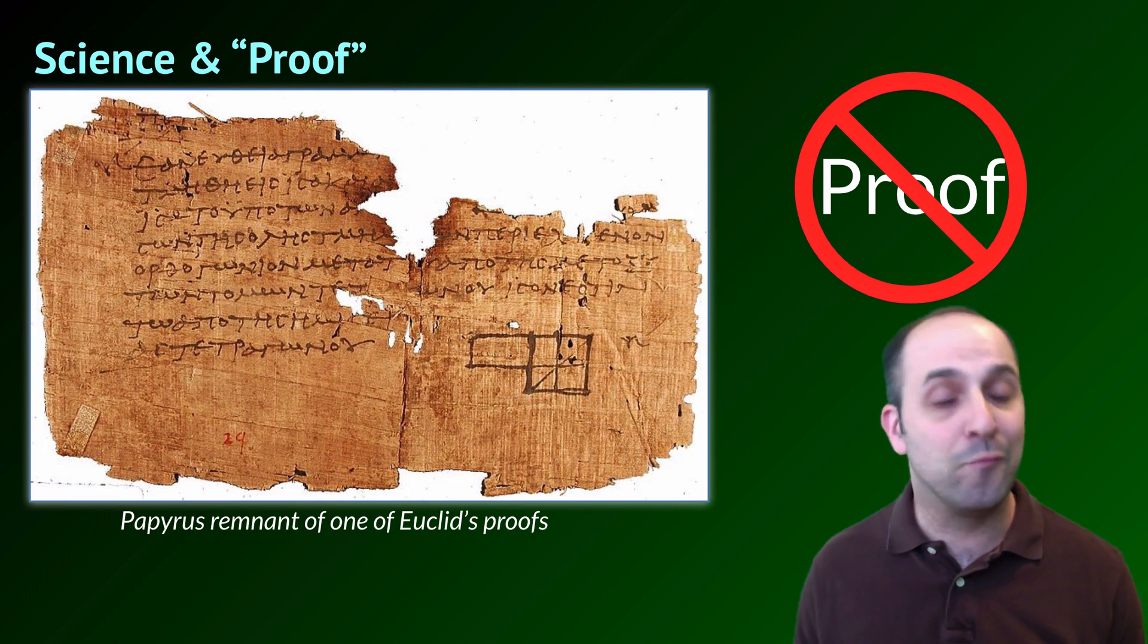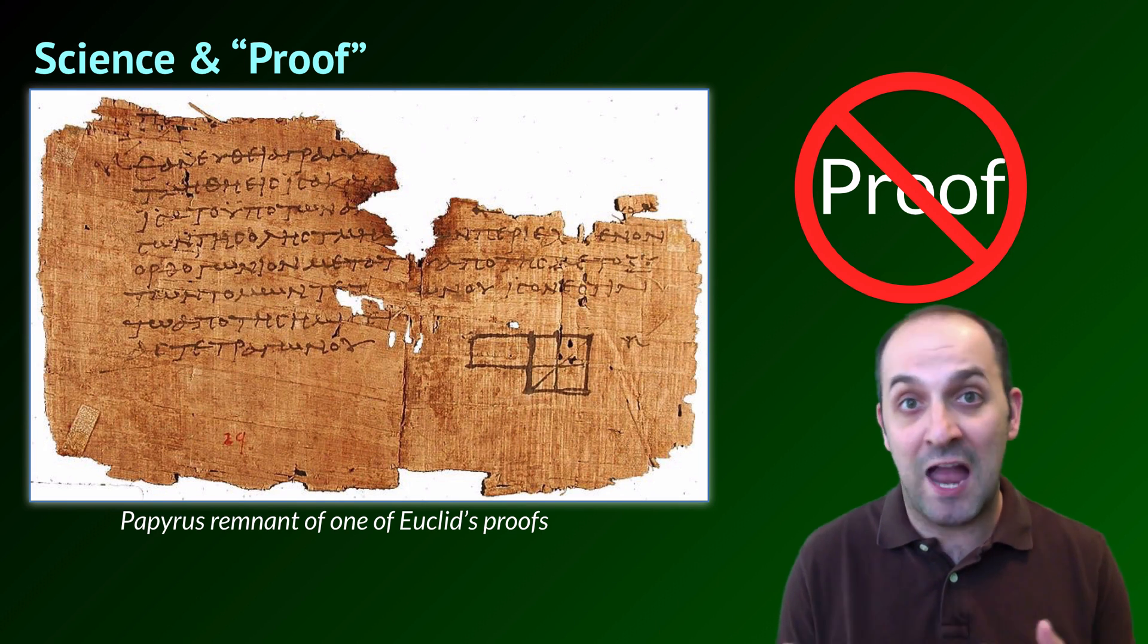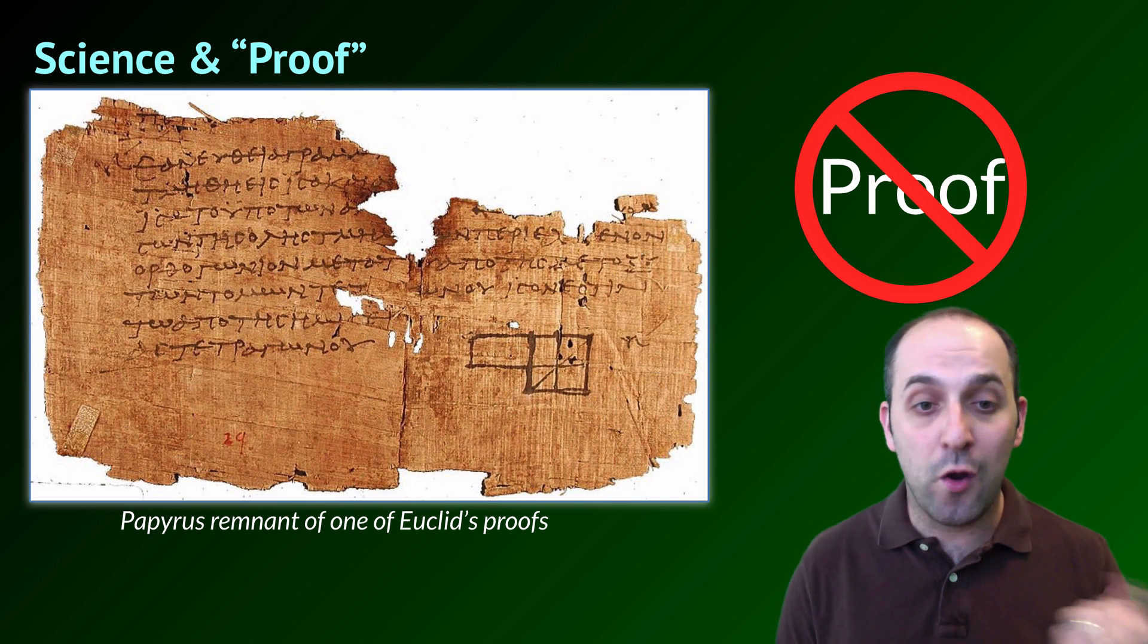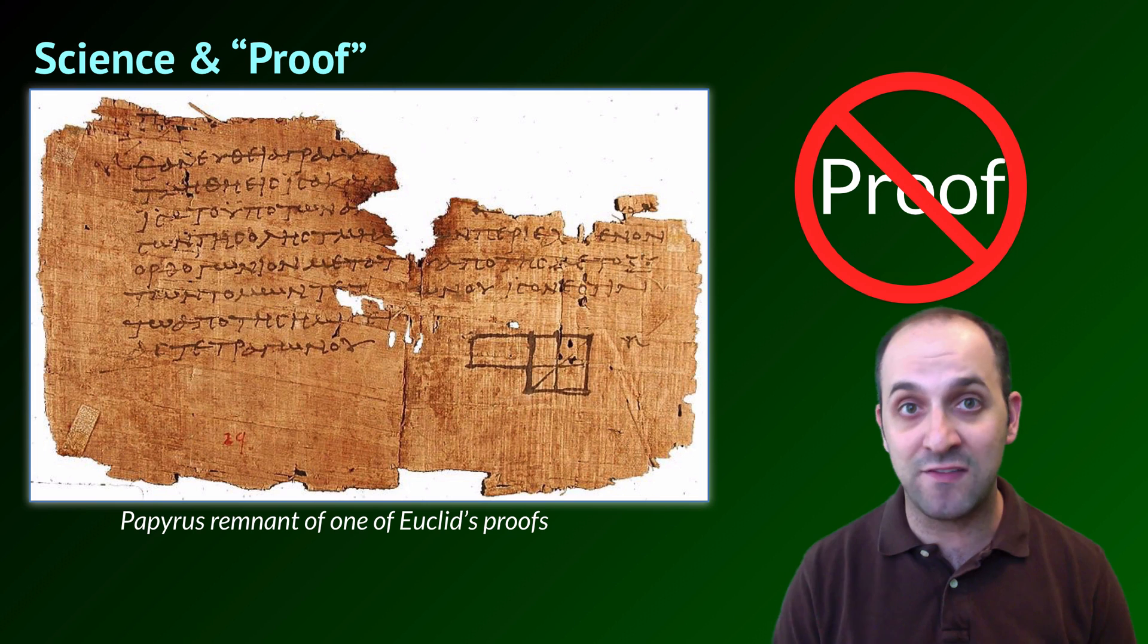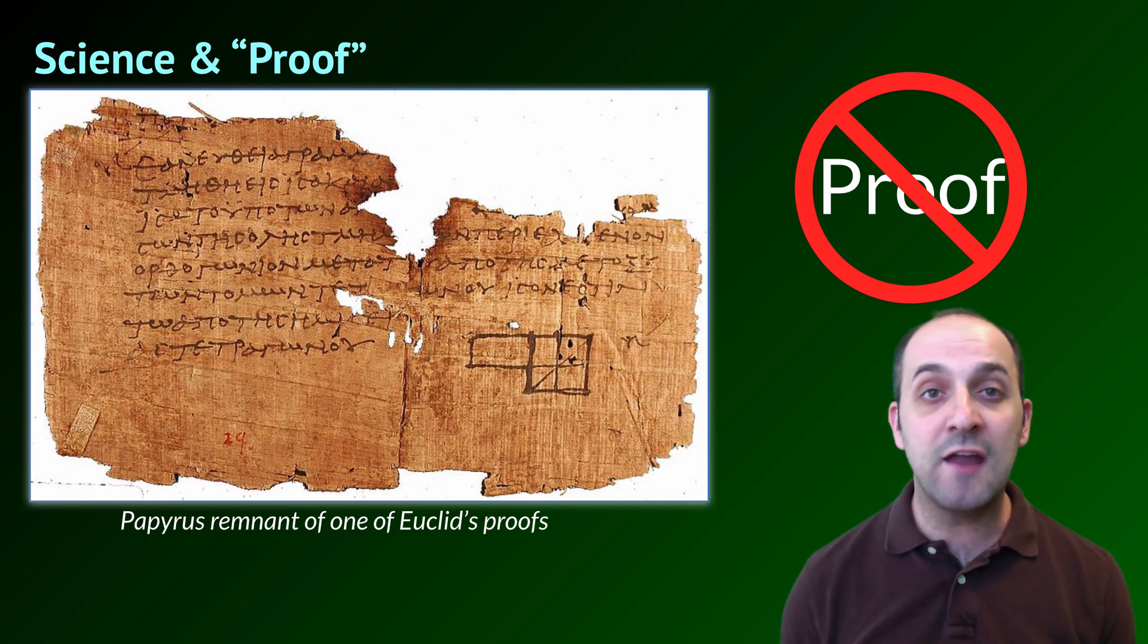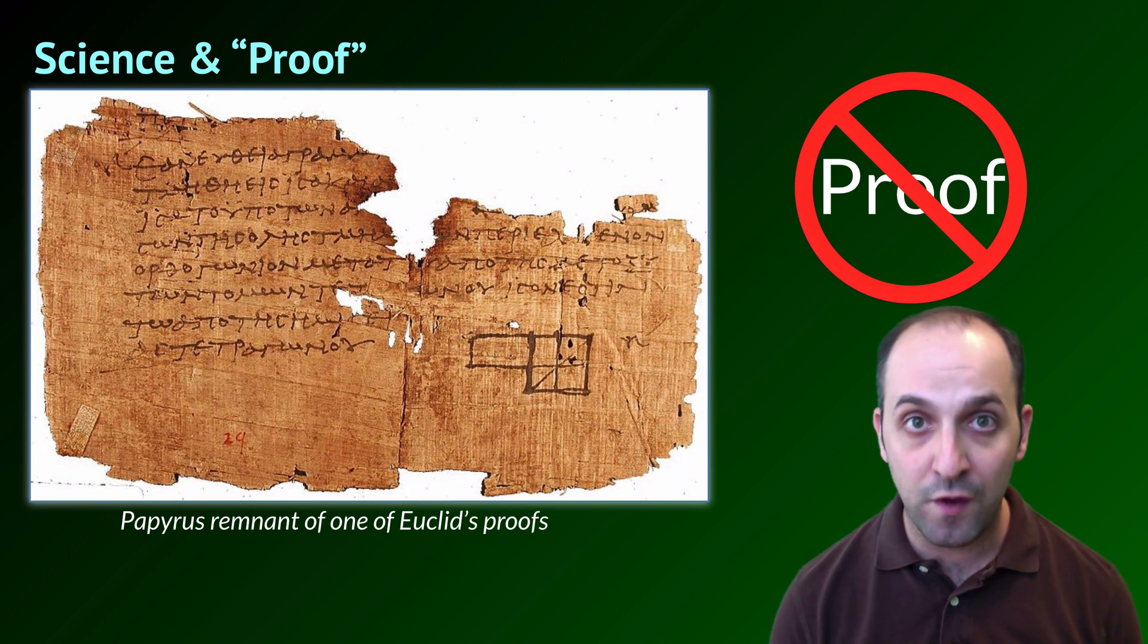The only place in human investigations of reality where we might be able to prove things is mathematics, and we can debate whether or not mathematics is actual reality or not. So, you know, Euclid could use proof. You've learned how to use proofs in your math class, and if you haven't, you will soon. In science, you really want to get rid of that word proof.